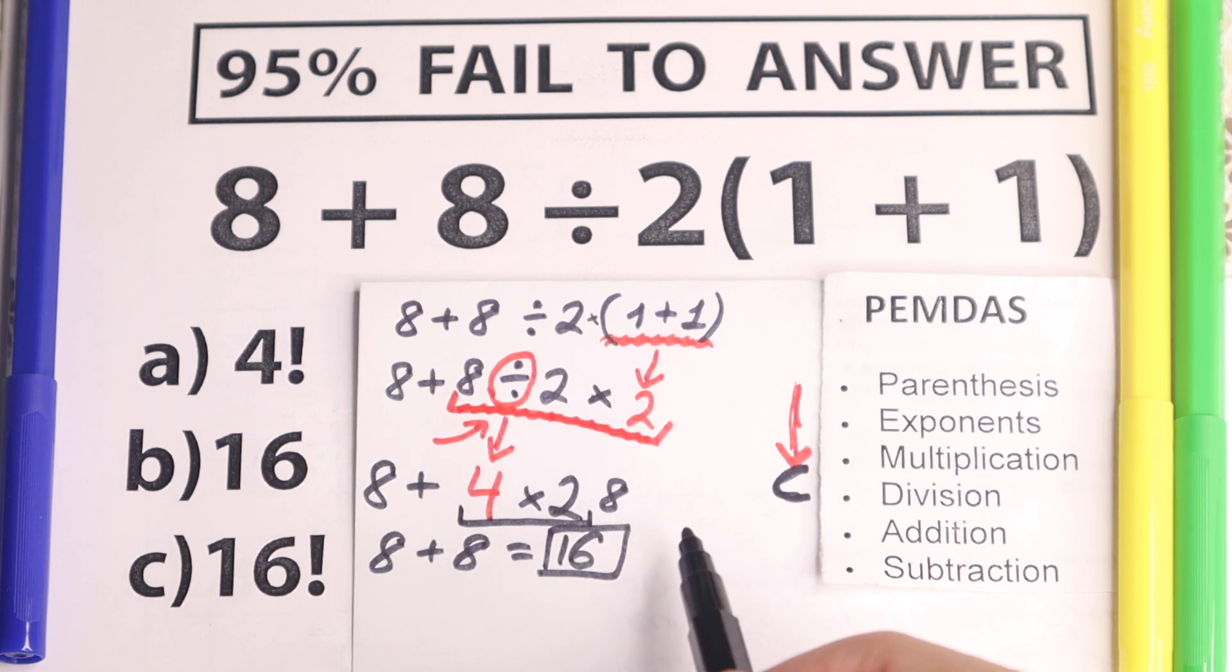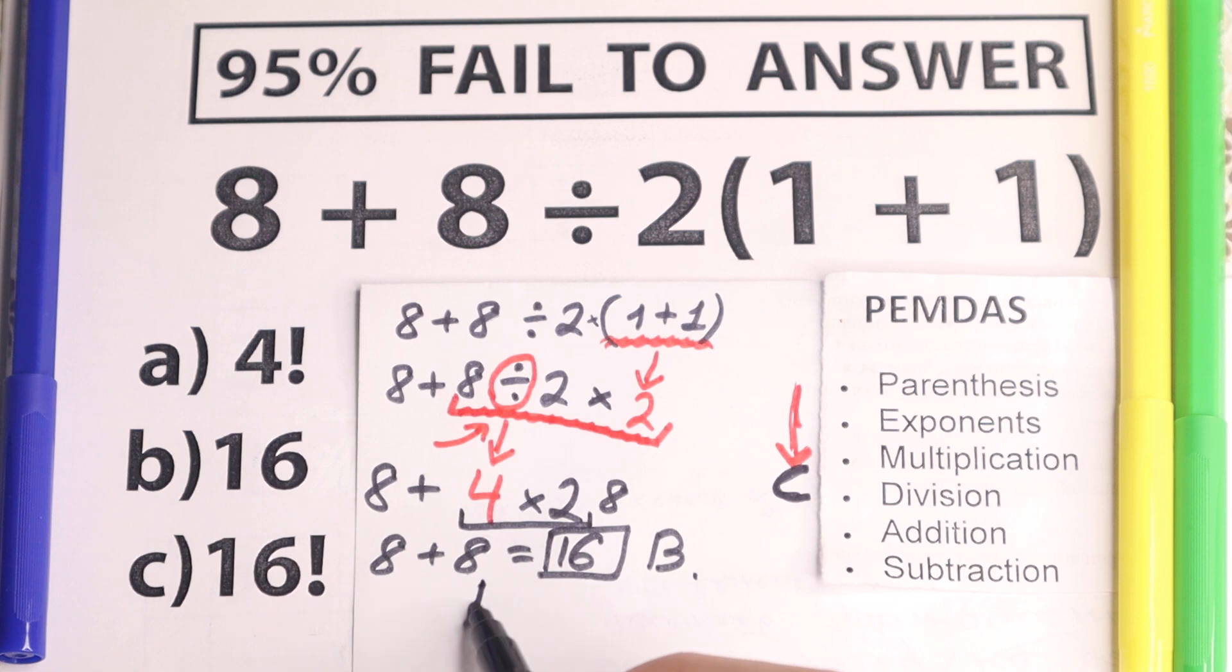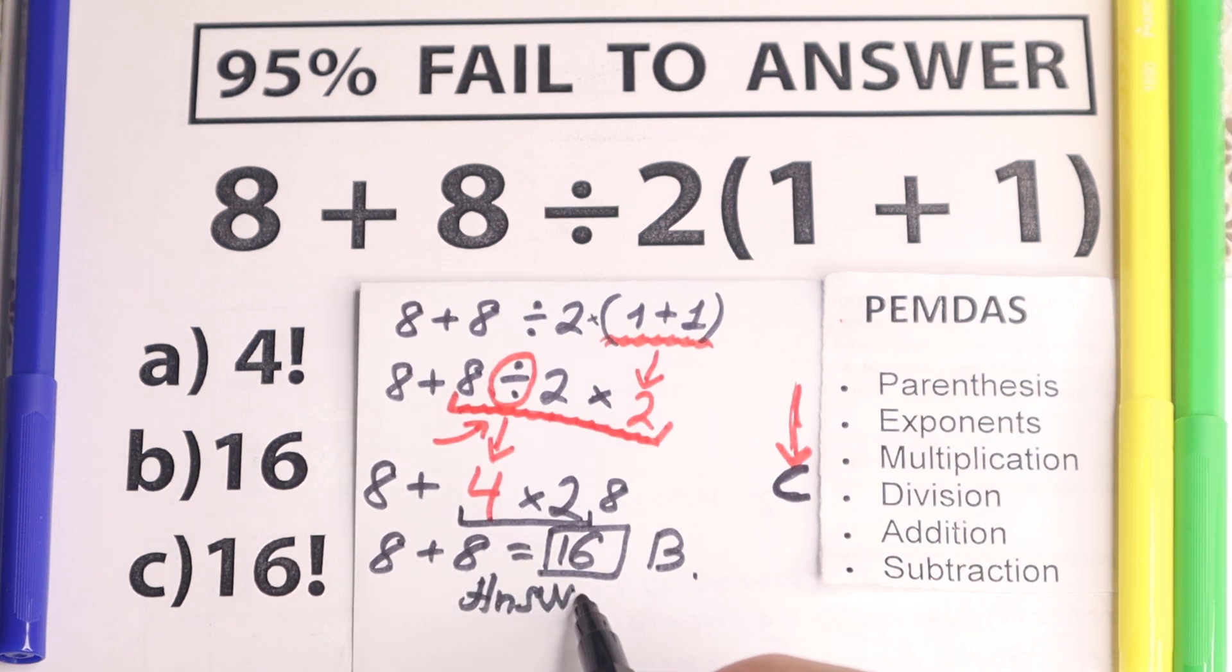And if you're talking about an option, this is option B. So according to PEMDAS our correct answer is option B. This is our 16.